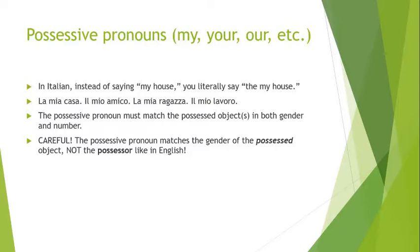The possessive must match the gender of the possessed object, not the possessor — not the person who owns it, like we do in English. In English, nouns don't have gender — 'car' is just a car, not masculine or feminine. So whether you say 'his car' or 'her car' depends on the gender of the possessor. In Italian it's the opposite — the gender matches the gender of the car, not of the possessor.